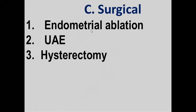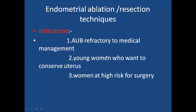Coming to surgical treatment: conservative surgeries include endometrial ablation and uterine artery embolization; radical surgery is hysterectomy. These minimally invasive conservative resection techniques are used whenever AUB is refractory to medical management. They are indicated when the patient wants to retain the uterus, doesn't want hysterectomy, is a young woman who wants to conserve the uterus, or is at risk and not fit for major surgery.